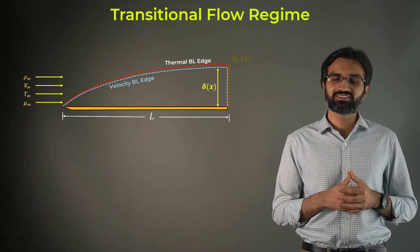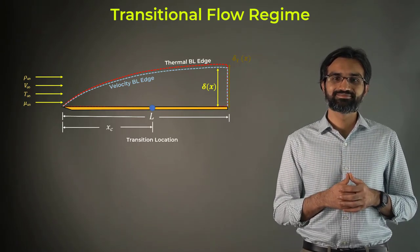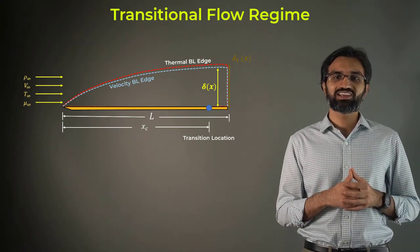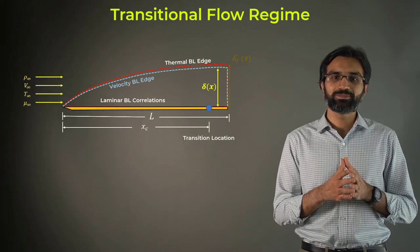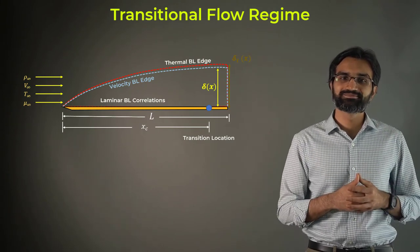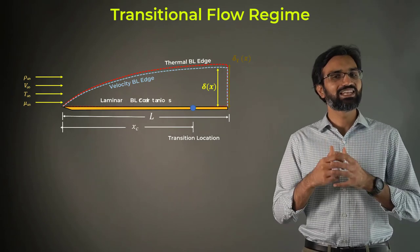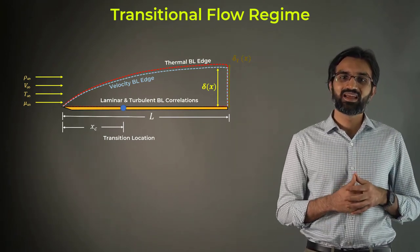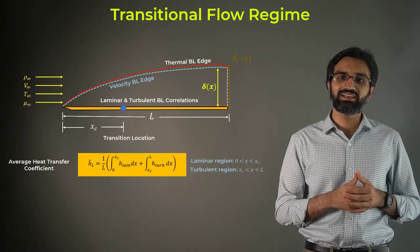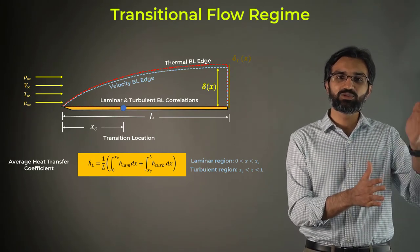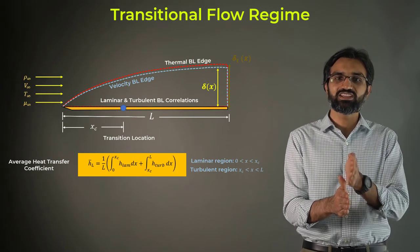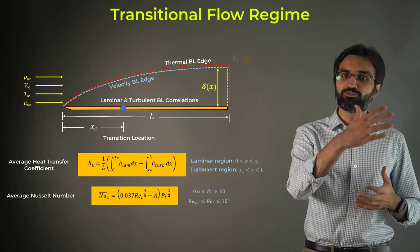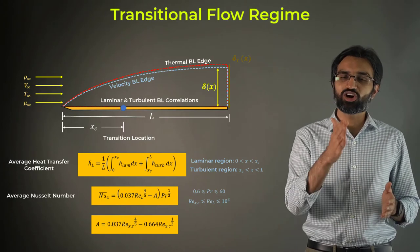Between the laminar and turbulent flow regimes, there is a region of transition. If this transition occurs much downstream of the plate, closer to the trailing edge, we can rely on the laminar boundary layer correlations to predict the heat transfer. However, if the transition region occurs much closer to the leading edge, the heat transfer is affected by both laminar and turbulent boundary layers. In such cases, where the flow transition occurs at length xc, we can calculate an average heat transfer coefficient over the entire length of the plate. The laminar region is between 0 and xc, and the turbulent region is between xc and L. Substituting both laminar and turbulent heat transfer coefficients, we obtain the following equation, where A is a constant based on the critical Reynolds number.